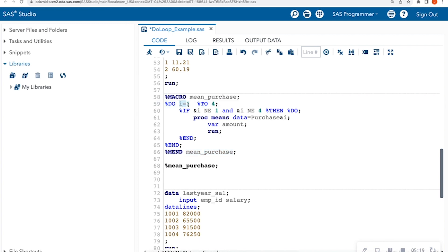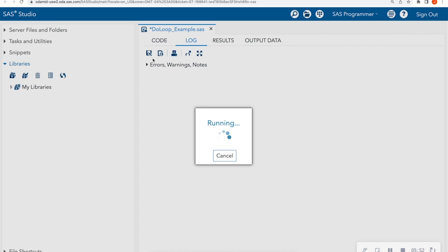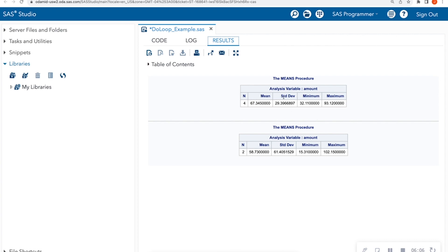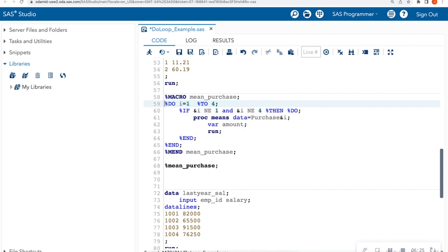So I'm calling the macro mean purchase, and then I'm going to end it with mend. I'm going to say do I equals one up to four. If it is not equal to one, and if I is not equal to four, then actually give me out a proc means procedure. So I don't care about the beginning month, and I don't care about the ending month, just everything in between. So I end my if statement with a percent end. And I also have to end the do loop with a percent end. So now when I run this piece of code, I see that I have the second and the third data sets.